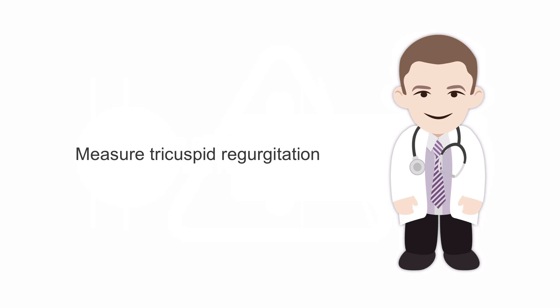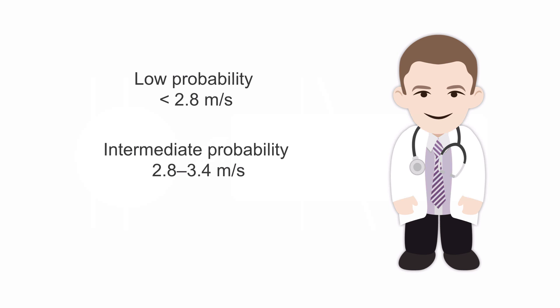One approach is to estimate it using a measurement of the tricuspid regurgitation itself. We can do this by measuring the maximum velocity jet of the tricuspid regurgitation using continuous wave Doppler. Then there are ranges of values that we can use to predict the likelihood of a correspondingly elevated pulmonary artery systolic pressure. A low probability value is anything less than 2.8 meters per second. Intermediate probability ranges between 2.8 and 3.4 meters per second. And high probability is anything greater than 3.4 meters per second.